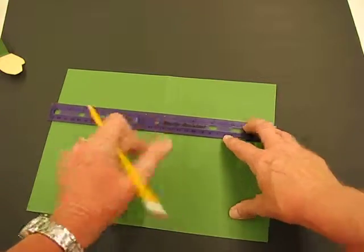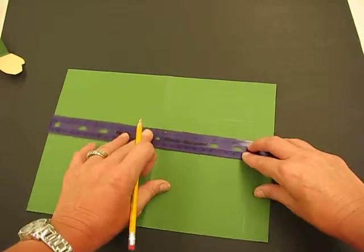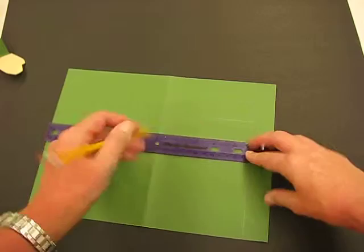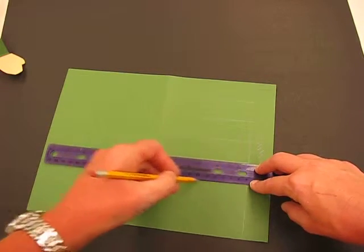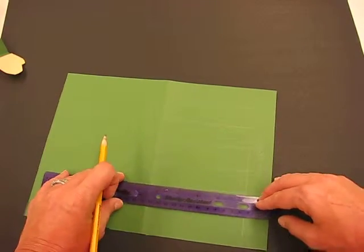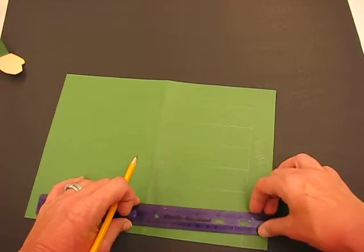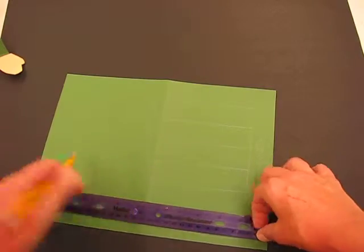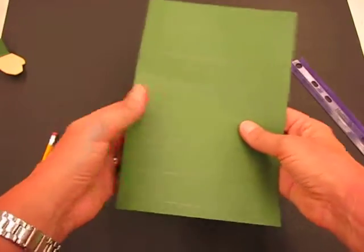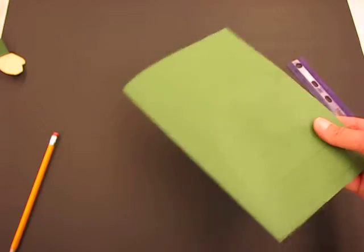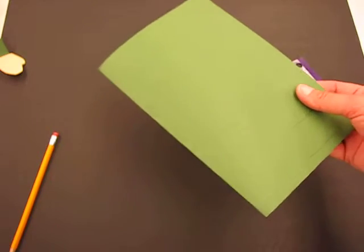I'm going to draw my lines. What I'm doing is lining the ruler up with the previous line that I drew, so I'm getting a nice straight line and getting them even, which means they're parallel. Once I've got that, I'm just going to fold it up and from the center I'm going to cut.